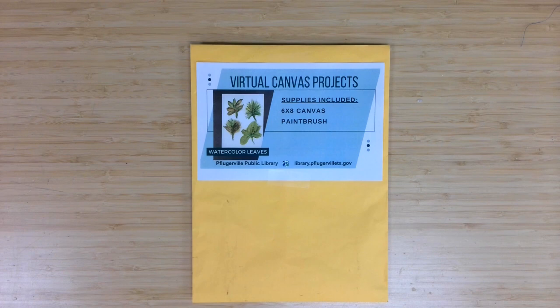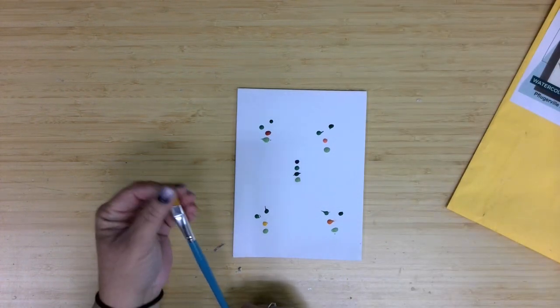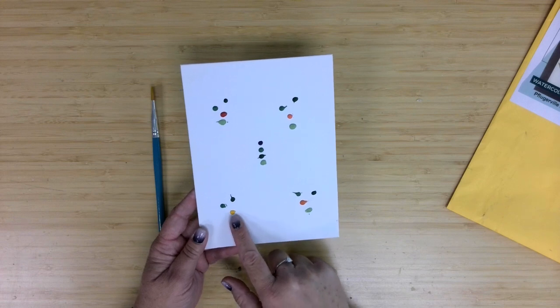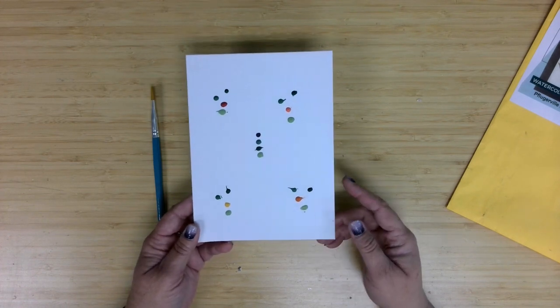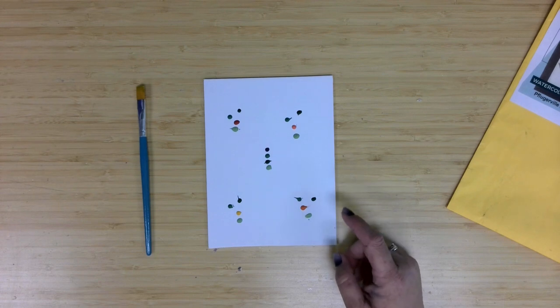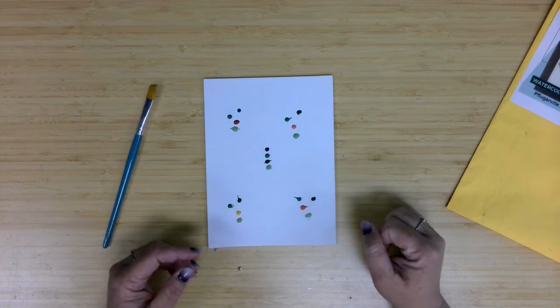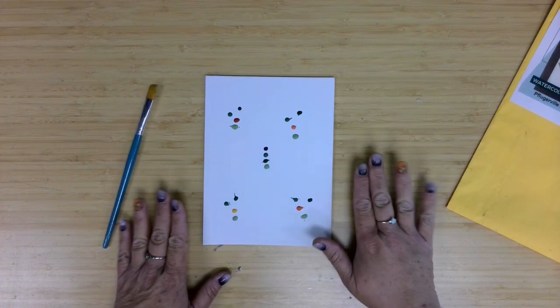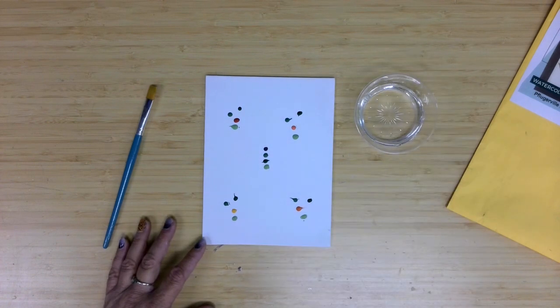Let's start with a look at the supplies being provided. In our envelope this month, we have a really straightforward half inch flat brush that we'll use to make our leaves. On our little 6x8 canvas panel, I have already provided pre-added watercolor paint drops, and that's what we're going to use. The paint dots are dry, so you're going to need one extra thing for this craft: a little dish or cup for some water, so we can reconstitute our paint drops.